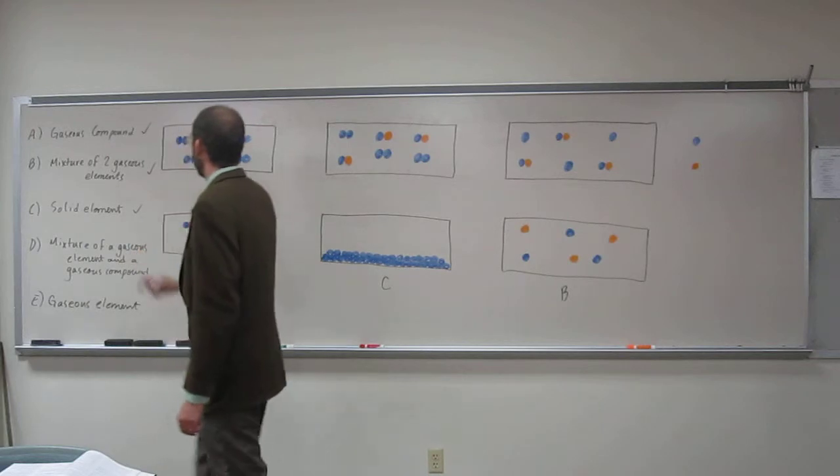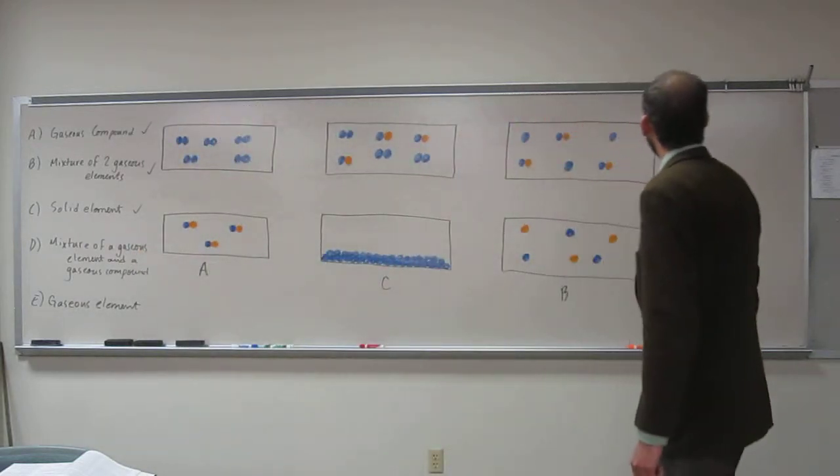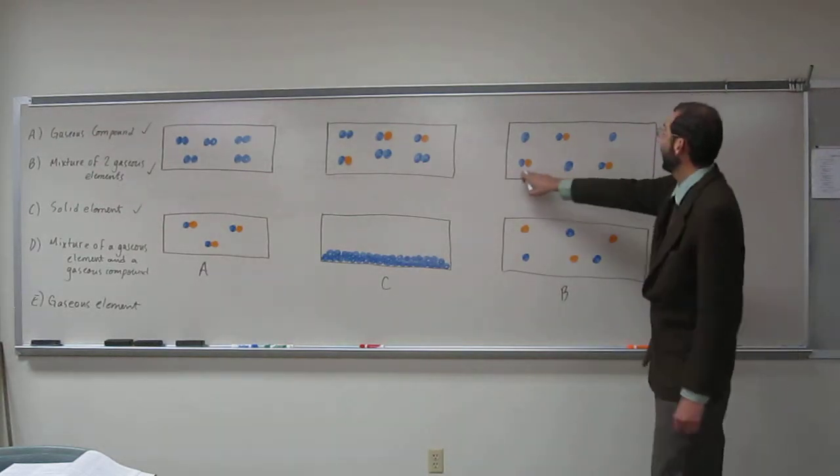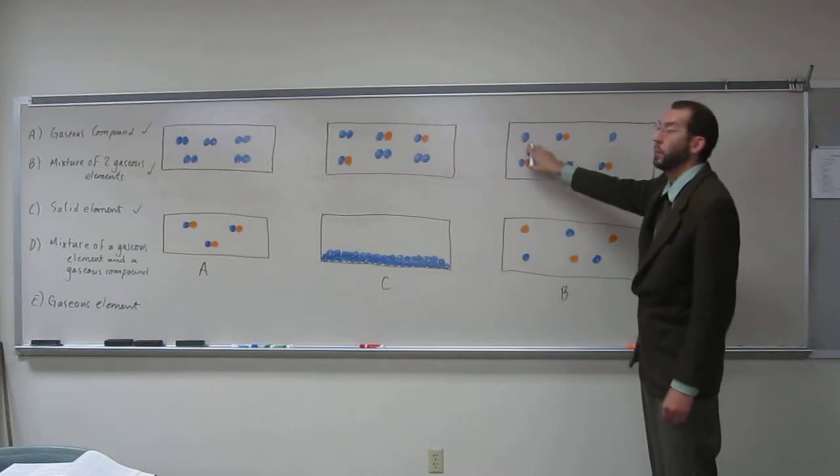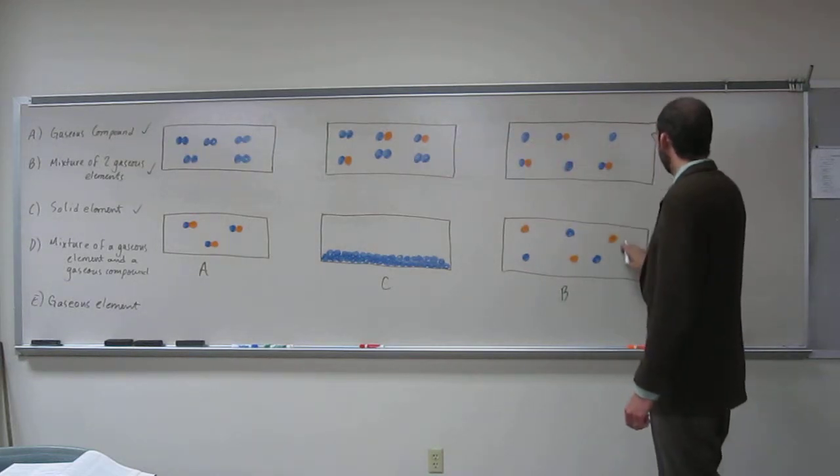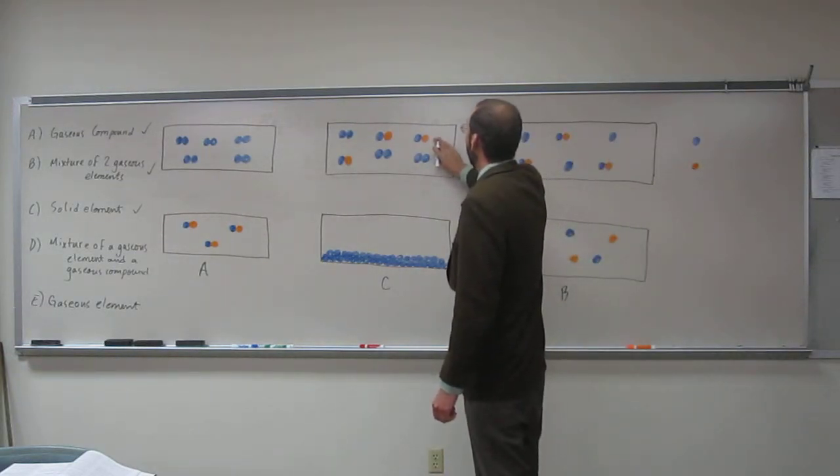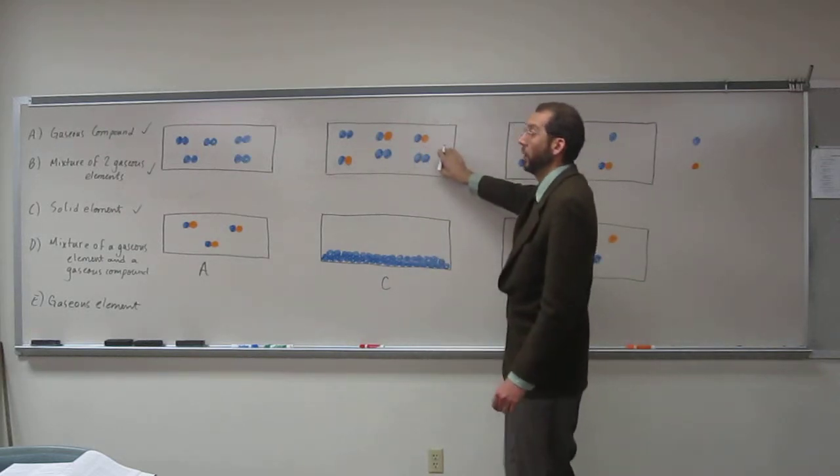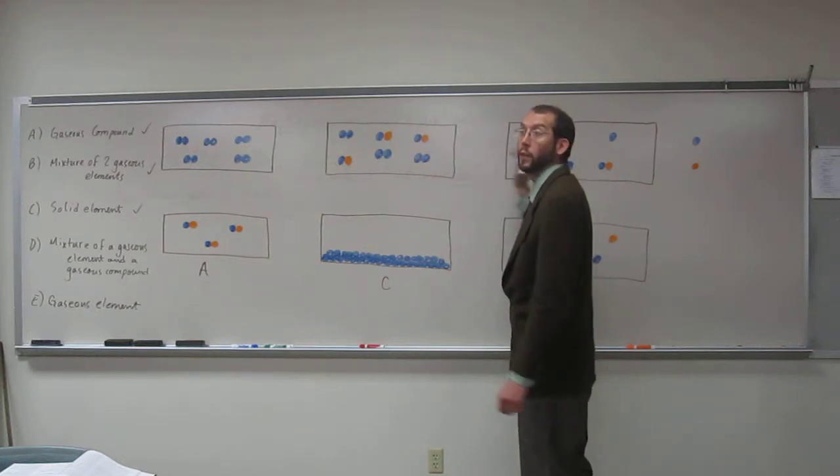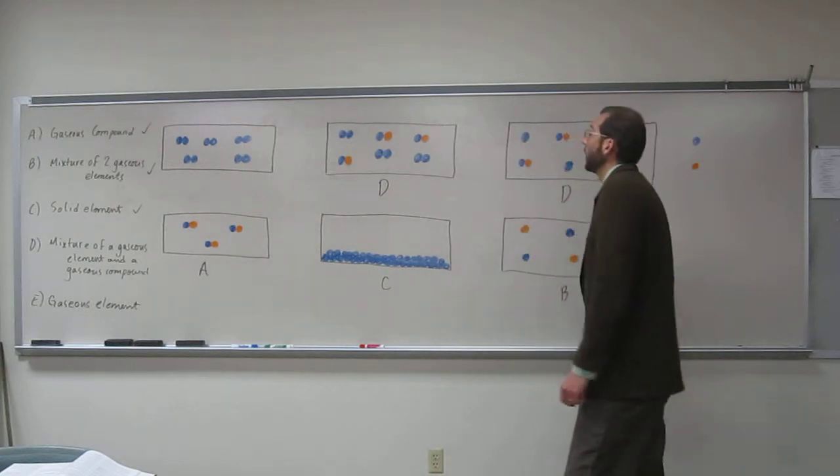So a mixture of a gaseous element and a gaseous compound. Well, here we've got that gaseous compound that we found earlier, and we've got a gaseous element. Here we've got just two gaseous elements, but here we've got a gaseous compound that we found earlier, and we talked about diatomics being element. So this one and this one would both be represented by D, or can be representations of D, I should say.